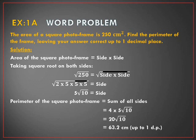In the fifth and final question, we need to find the perimeter of a square photo frame which has an area of 250 cm², leaving our answer correct to one decimal place. From the formula for perimeter of a square — 4 × side — we need to find the value of one side first. Using the formula for area of a square, side × side = 250, so we take the square root on both sides.